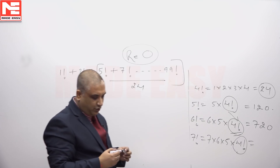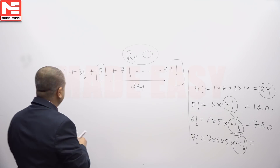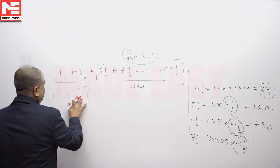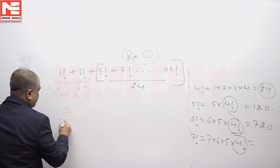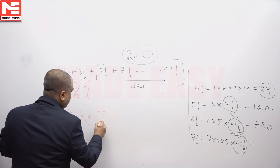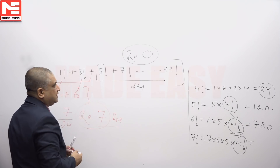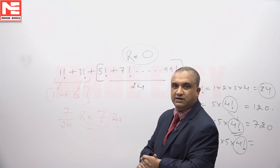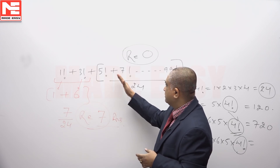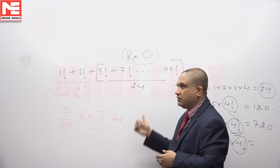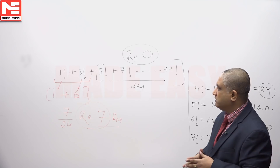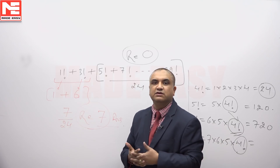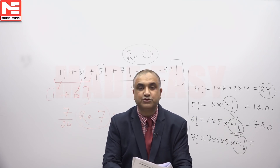We will get a remainder only from the first two factorials. Factorial 1 is simply 1 and factorial 3 is simply 6. Adding them gives 7, and 7 divided by 24 leaves a remainder of 7. So in this question, since 4! and every factorial beyond it is a multiple of 24, we only need to add the initial two terms. The remainder is 7, so the answer is option A.